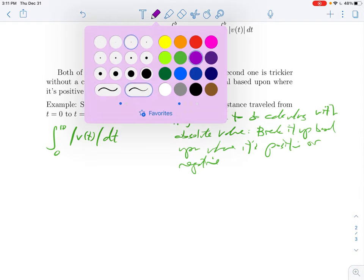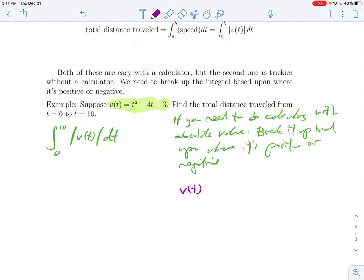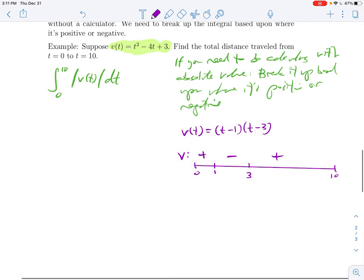And I want to find the total distance traveled from time 0 to time 10. Total distance traveled would be the definite integral of speed. And speed is the absolute value of velocity. So this is what we want to do. If you are allowed to use your calculator, you're good to go. You have a formula for this. Just type it all in with the absolute values. Your calculator knows what to do. But if we want to do this by hand, we have to be careful. Absolute value is not a differentiable function. So it does not play well with derivatives and integrals. We need to break it up.